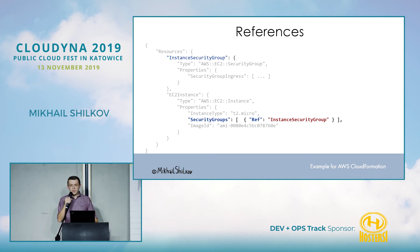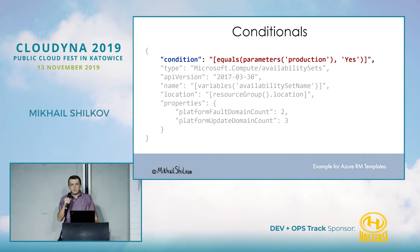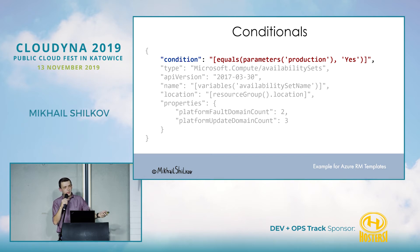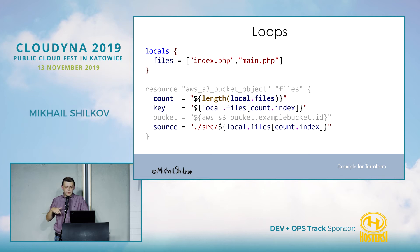For example, this is how AWS defines dependencies between resources — they have a special attribute 'Ref' and you match the name, so they know it's a dependency. For conditionals, Azure has a special 'condition' attribute: if it evaluates to false, Azure won't deploy your resource. Terraform introduced loops just this year or last — you define local arrays and use a special 'count' function with a 'count.index' construct to know which iteration you're in. They invent a language inside the language.